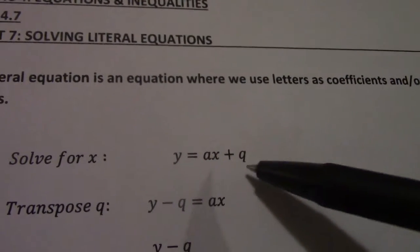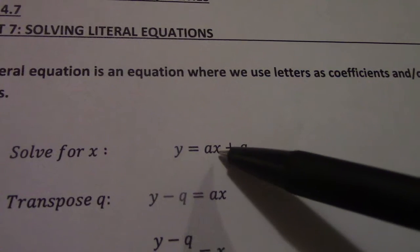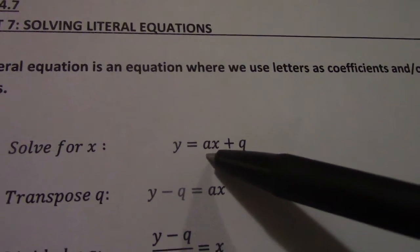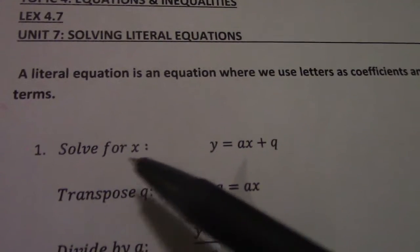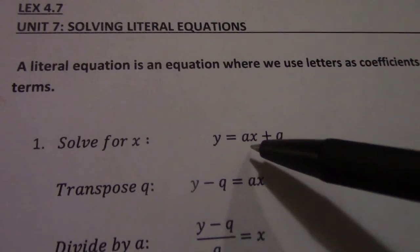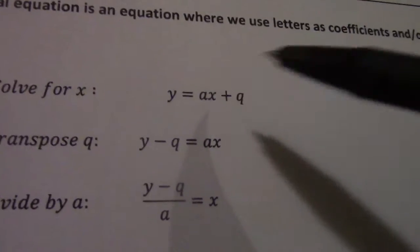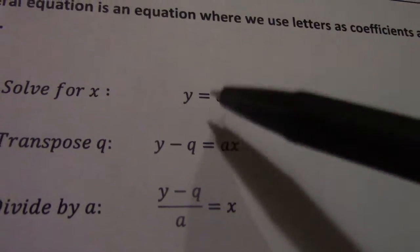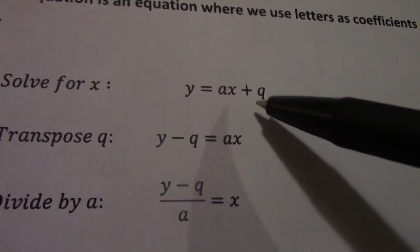Look here, right through the whole equation we have letters. The coefficient of x is a. My constant term here is q. So question 1, solve for x, meaning we have to make x the subject of the formula. So as soon as we have to make x the subject of the formula, we have to get rid of everything attached to x.